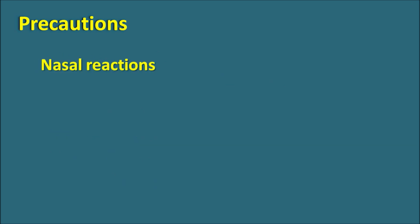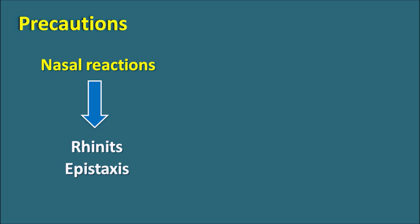Another precaution concerns nasal reactions, since this drug can be given by the intranasal route. Two important nasal reactions are rhinitis and epistaxis. If either of these conditions is observed, calcitonin should be given carefully. Another important precaution is the increased risk of malignancies — if any symptoms of developing malignancies appear, calcitonin should be withdrawn to prevent severe malignant disorders.